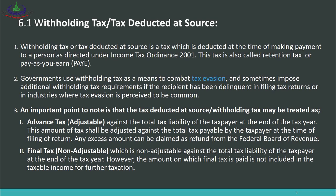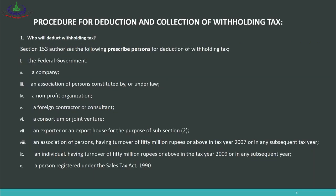The second type of withholding tax is final tax, also called non-adjustable tax. It means the withholding tax deducted is not adjustable against the total tax liability of the taxpayer at the end of the tax year. However, the amount on which final tax is paid is not included in the taxable income for further taxation — so that income or transaction is not taxed again.